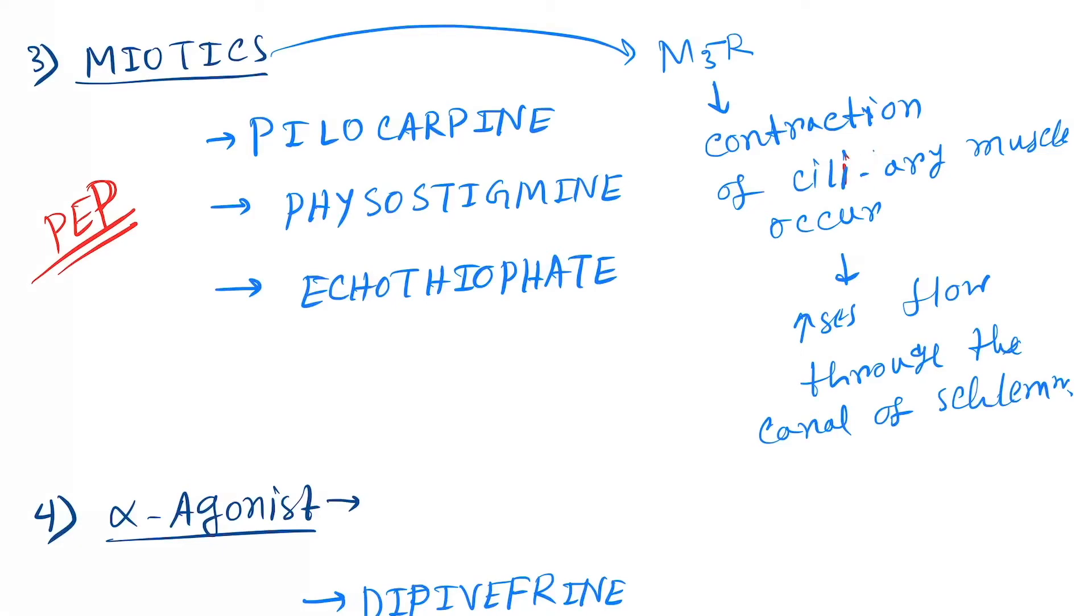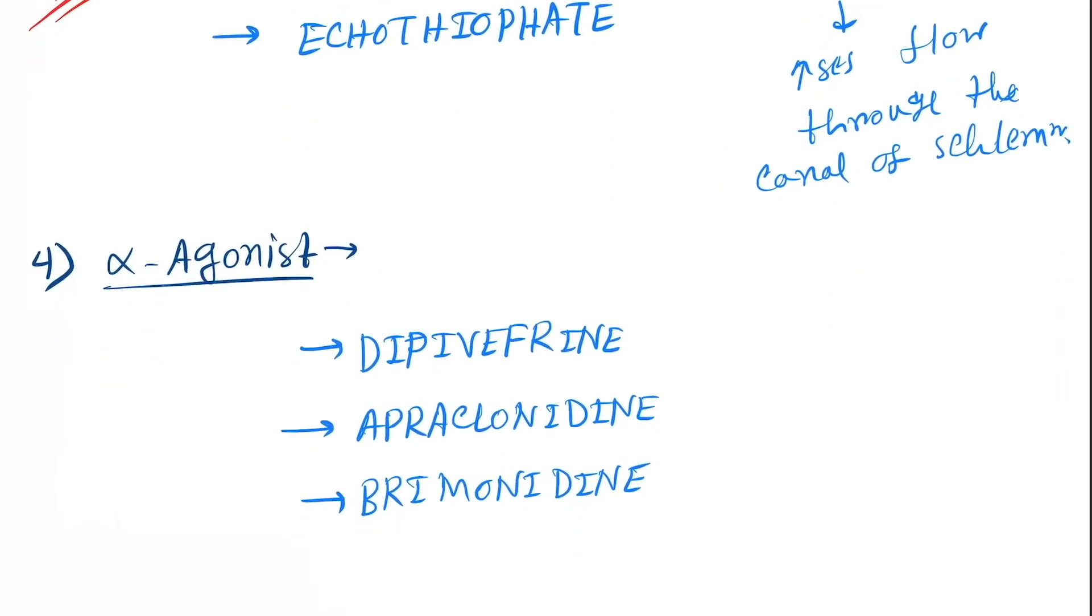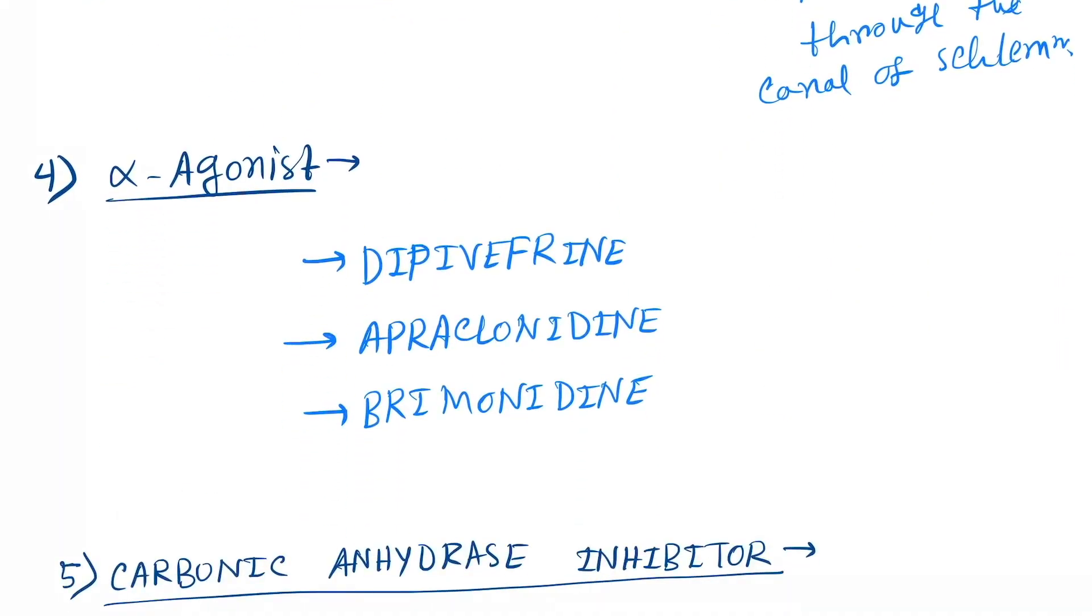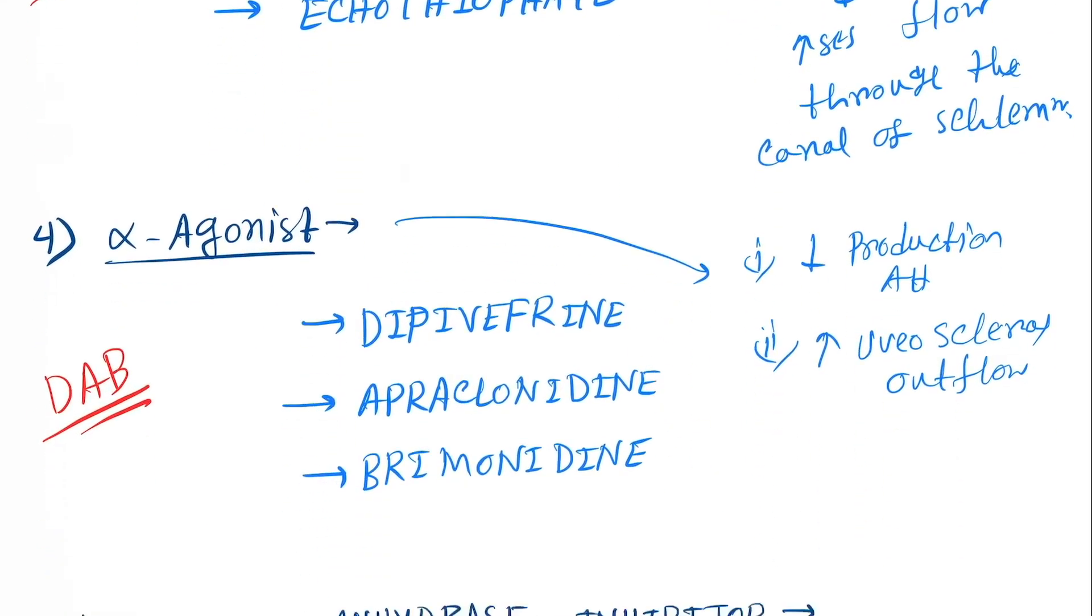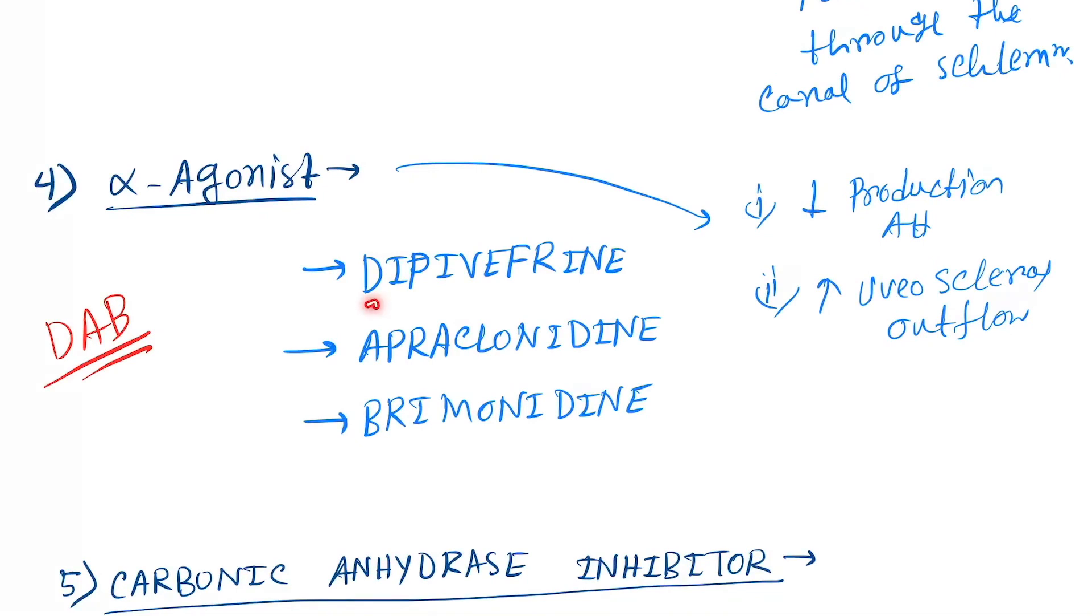Next is alpha agonists. They act mainly by two mechanisms. First one is to decrease production of the aqueous humor, and second is to increase the uvioscleral outflow. You can remember the mnemonic DAB. D for dipivefrine...